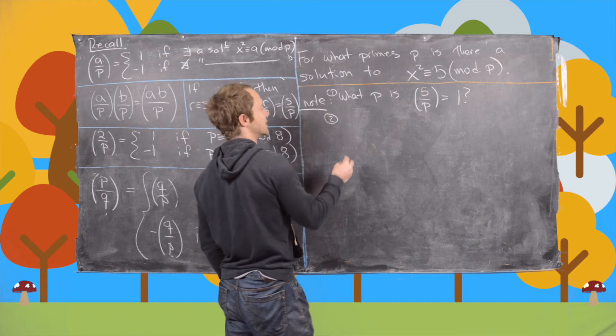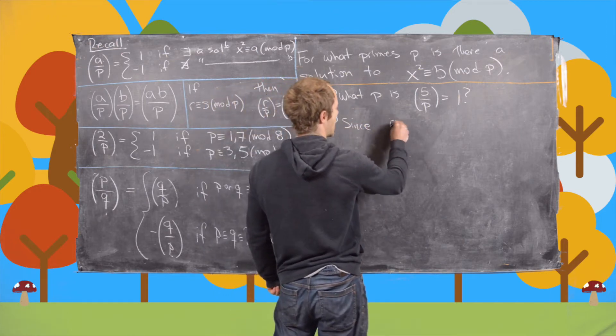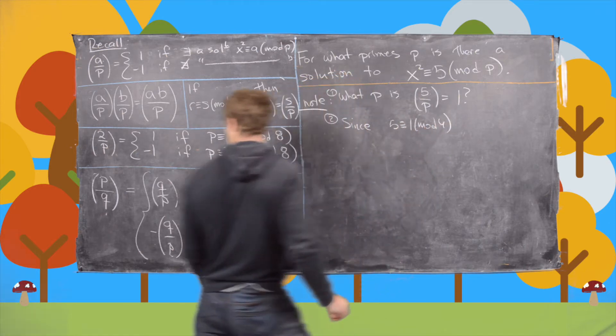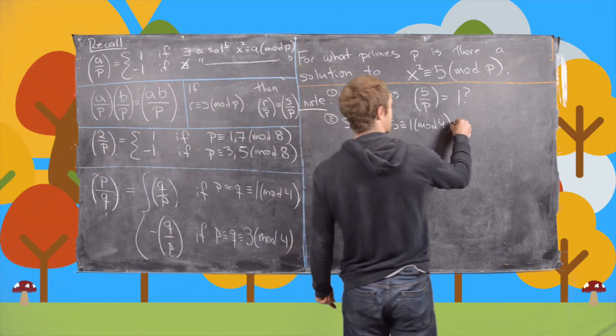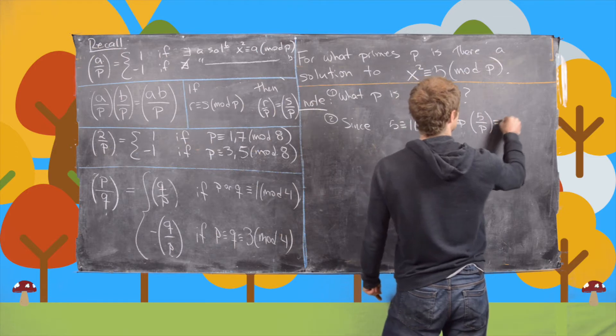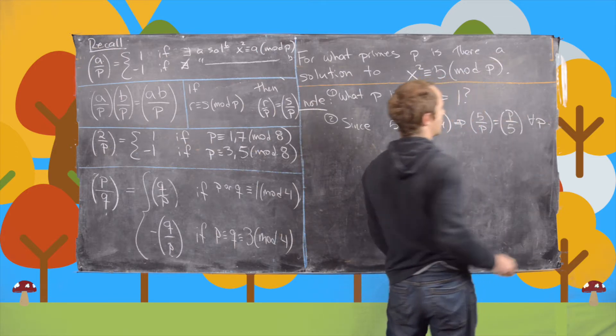And then the second thing to notice is since 5 is congruent to 1 mod 4, we can apply this property of quadratic reciprocity to tell us that 5 by p is the same thing as p by 5 for all primes p.